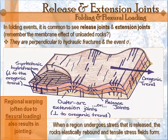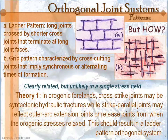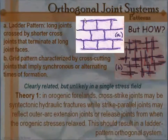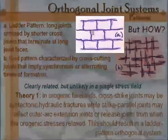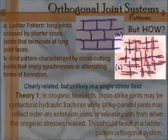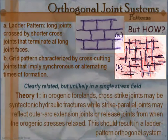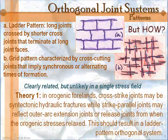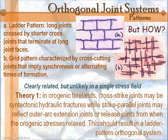As we get into jointing patterns, we can talk about orthogonal joint systems. These joint systems are actually a little perplexing to geologists, and there's no consensus on how or why they form. You have two types: the ladder pattern, which has long joints running through it crossed by short joints that terminate at the free surfaces of the other joints; and an even more perplexing grid pattern, which has cross-cutting relationships. If they're cross-cutting, that implies a synchronous or alternating formation — it couldn't have all formed at once. The explanations for both patterns are often elusive when interpreting what you're looking at in the field.